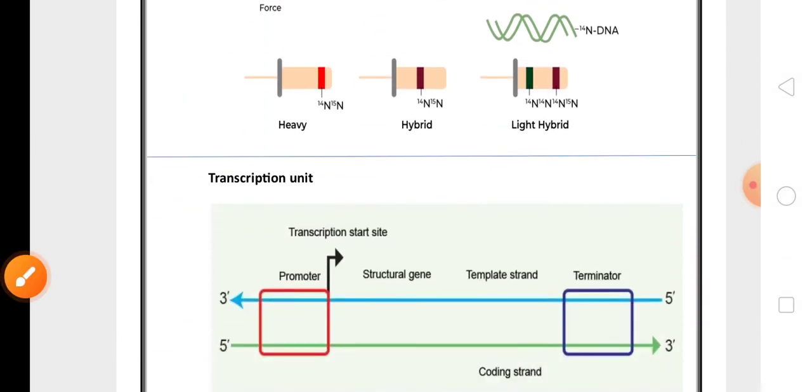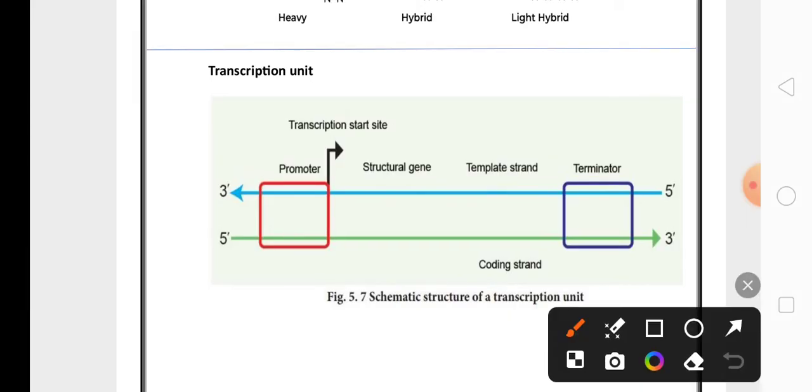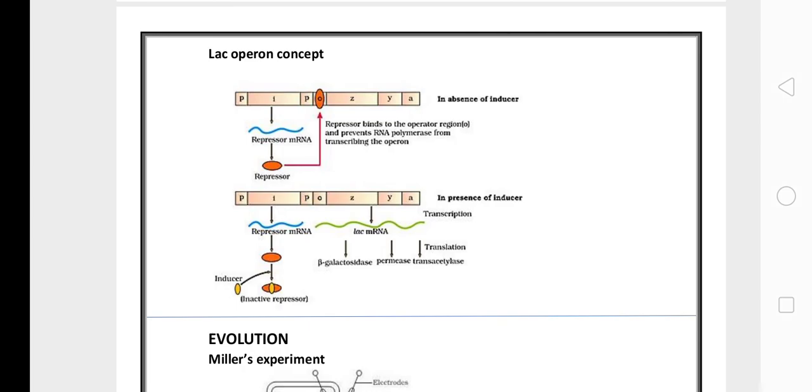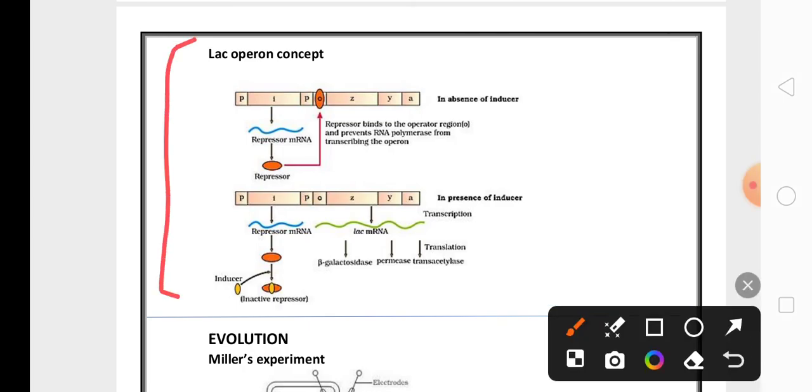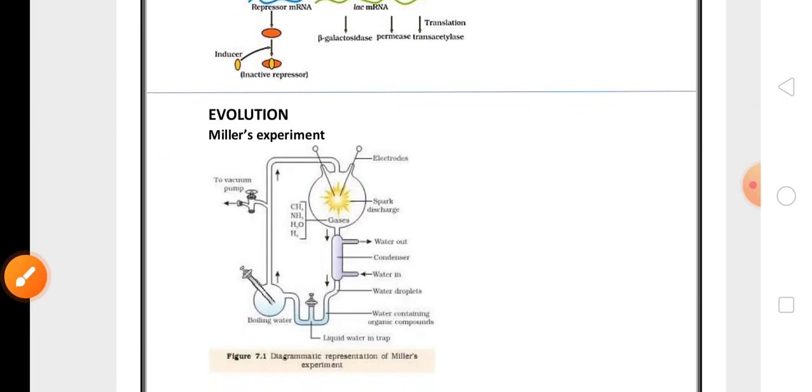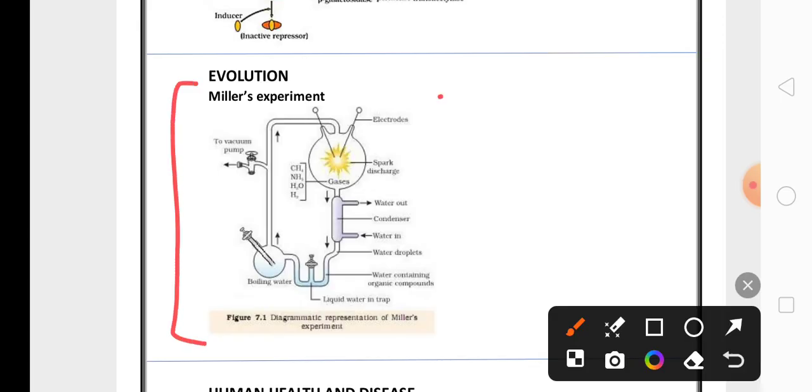Then three marks transcription unit diagram is highly important for the exam. Then from this chapter one more five marks question is lac operon concept diagram in absence of inducer and in the presence of inducer, is highly important. From evolution chapter there is only one diagram which is very very important, that is Miller's experiment diagram.